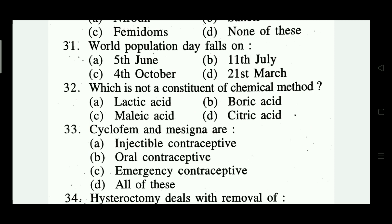Question number thirty-two: which is not a constituent of the chemical method? Options: lactic acid, boric acid, malic acid, citric acid. The right answer is malic acid — option C.